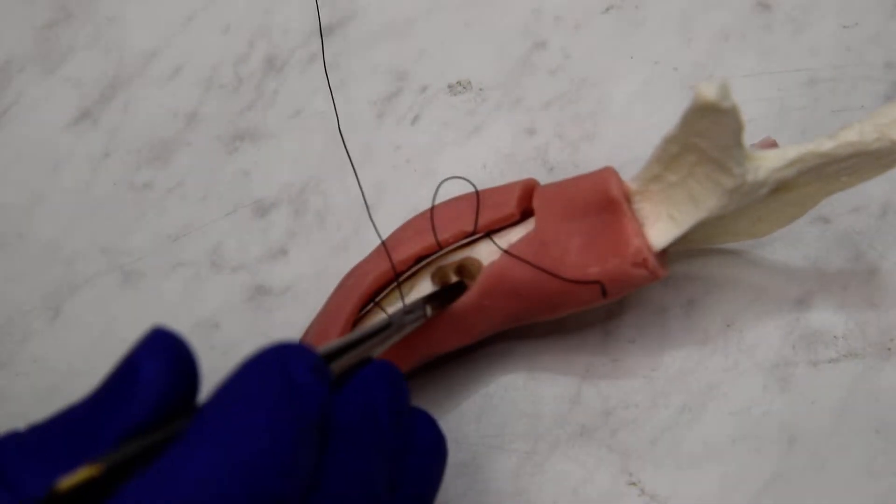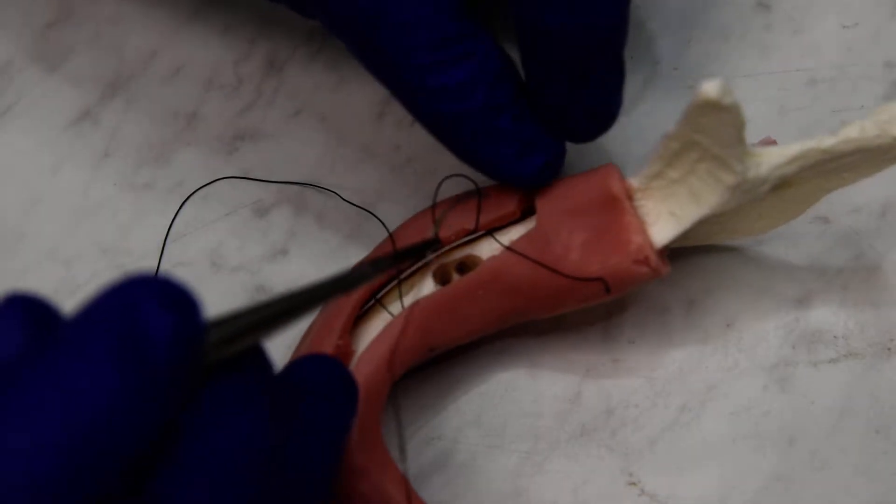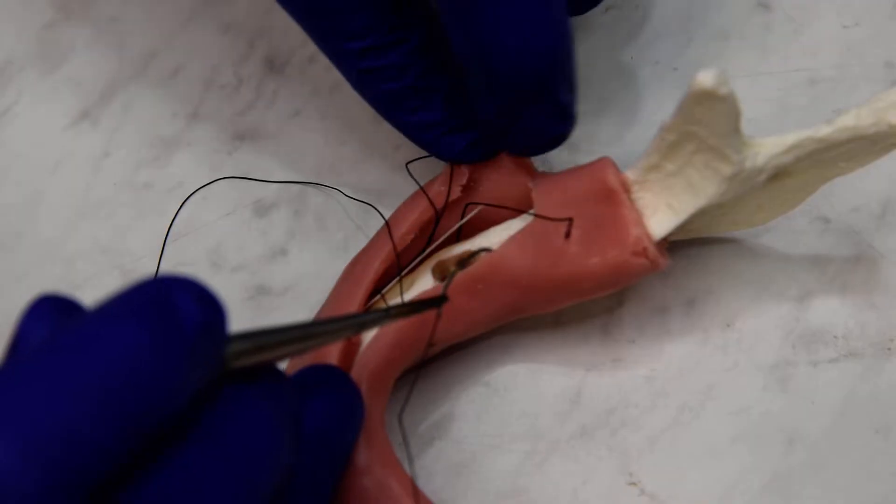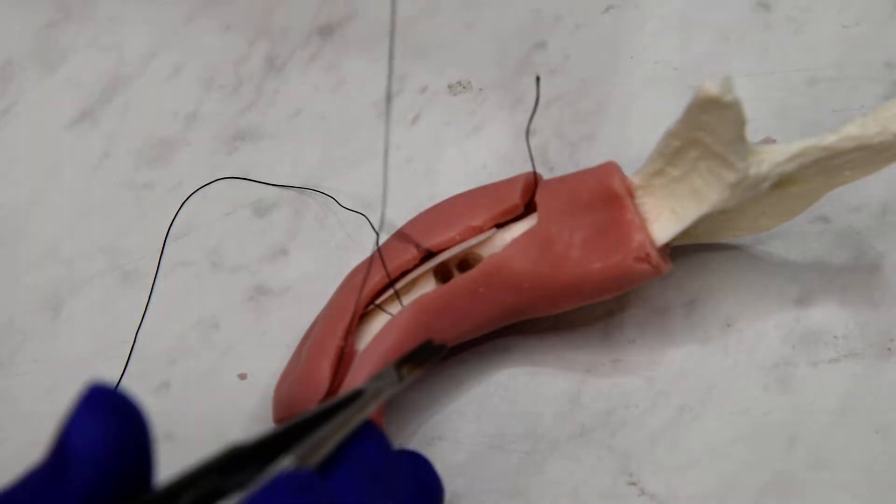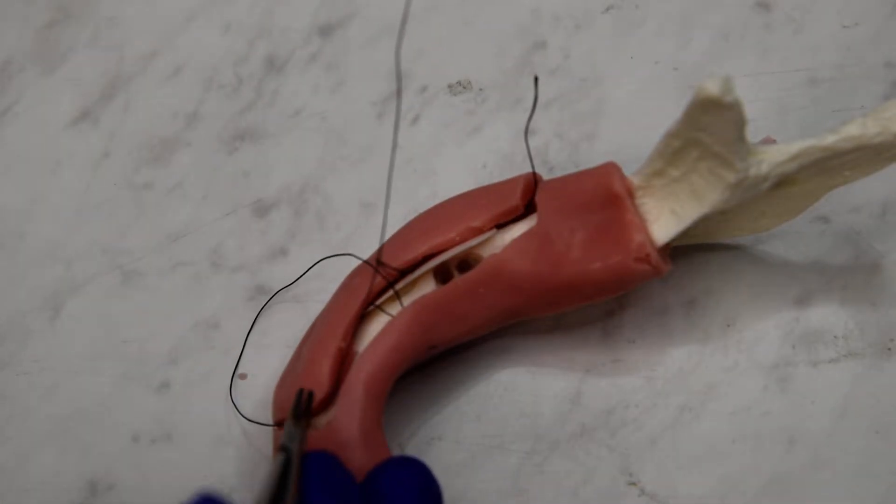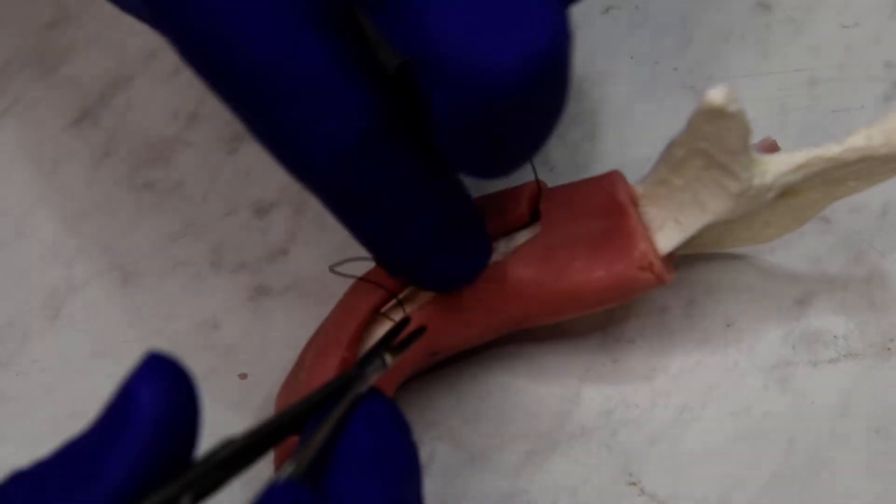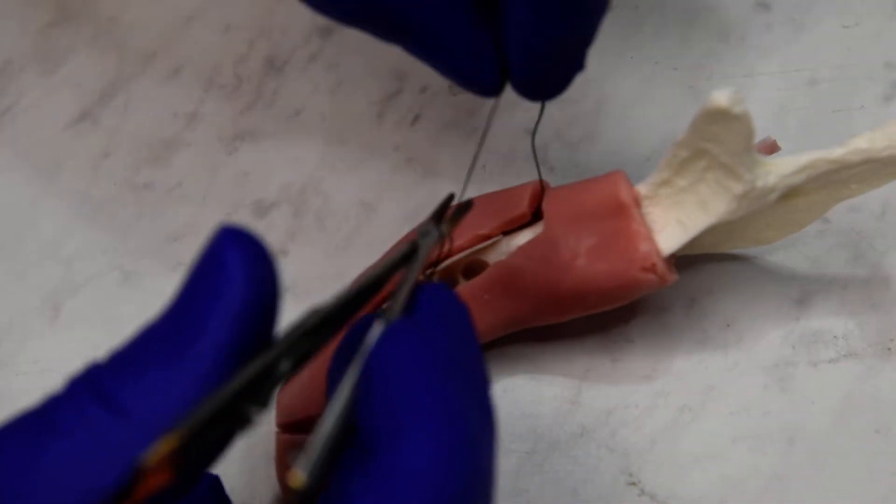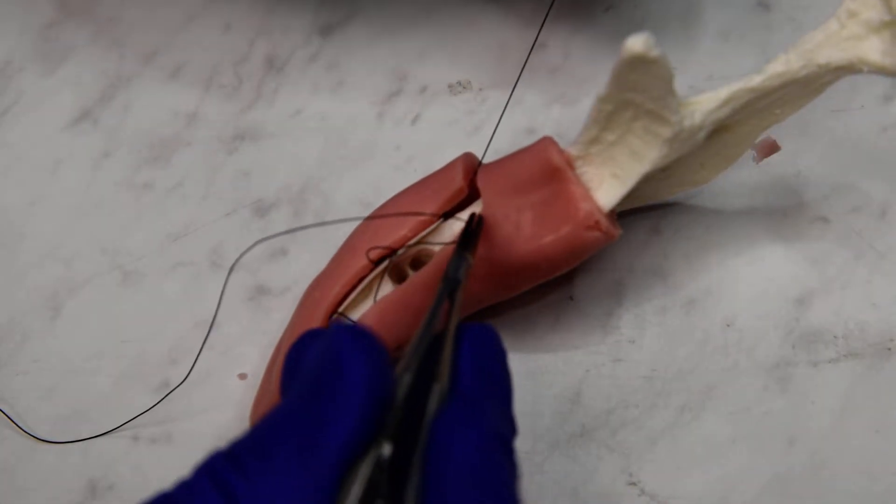Now before we do our second lingual loop, we're going to pass our needle through the loop that we left exposed. So we pass that through, and this will form our second strap, and we'll grab the original tail at this point and kind of tighten things up.